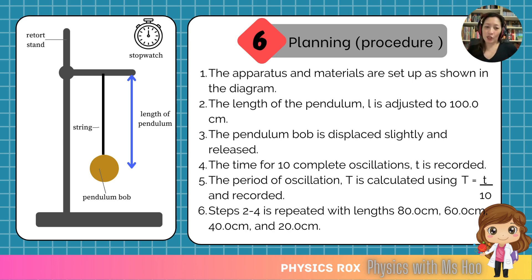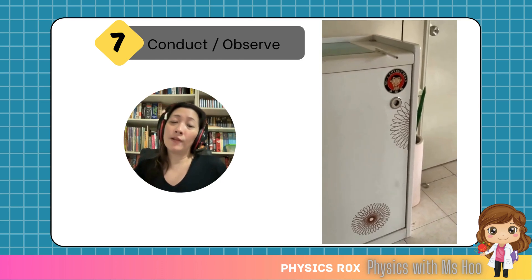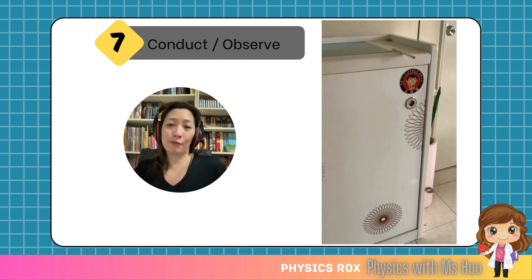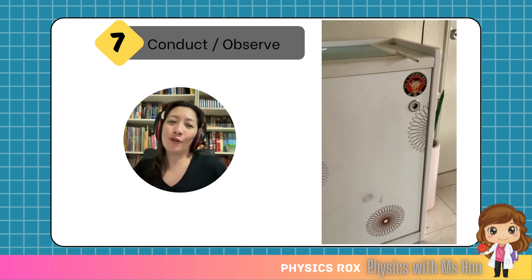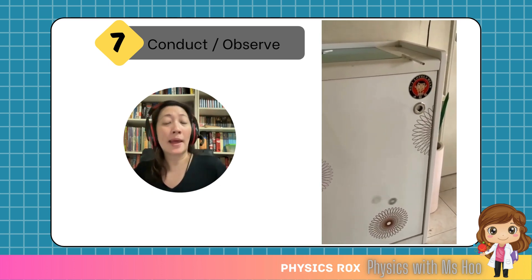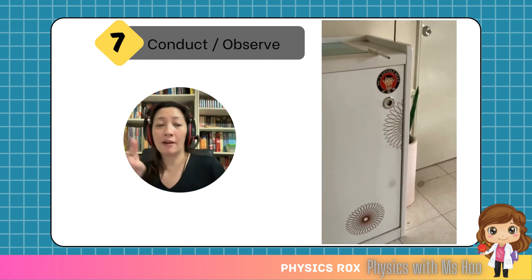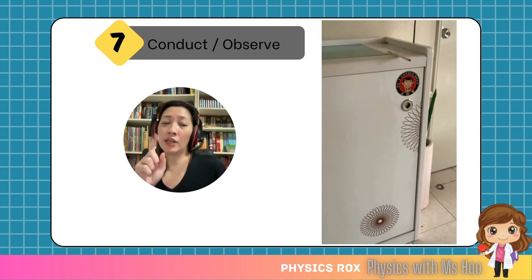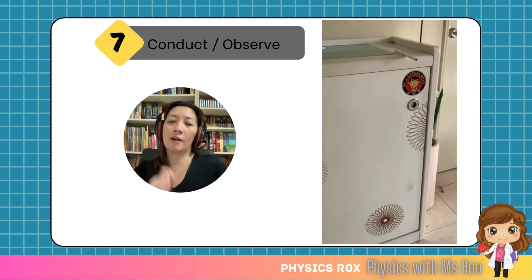This is only the planning stage. We'll actually have to conduct the experiment to get the data to analyze and find out whether the hypothesis is true. I have included a snippet from a video I made when conducting this experiment at home. You can see the pendulum bob oscillating, and you need to use your stopwatch to measure the time for 10 complete oscillations. Remember that one complete oscillation is from one extreme point all the way to the other and back to its original position.